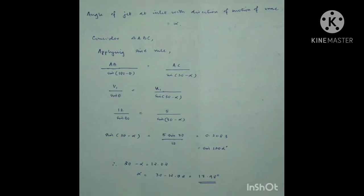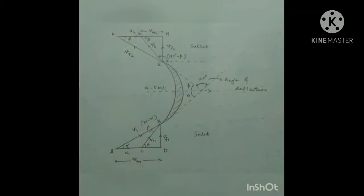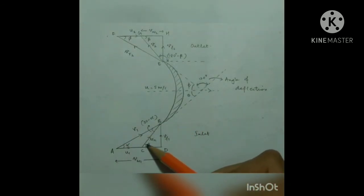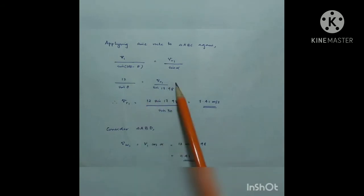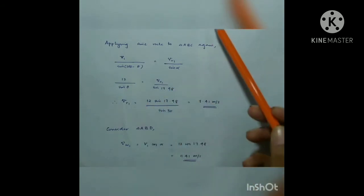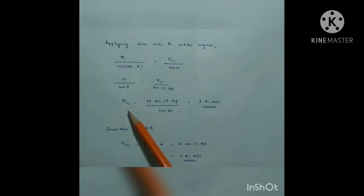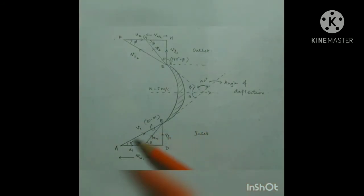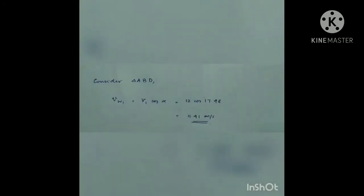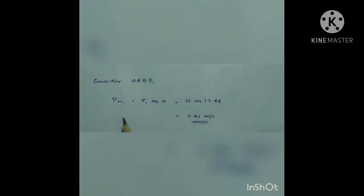We have found alpha. For the second part, applying the sine rule again to triangle ABC: V1 / sin(180° − theta) = Vr1 / sin(alpha), which gives 12 / sin(theta) = Vr1 / sin(17.98°), and we get Vr1 = 7.41 m/s. Now considering triangle ABD, Vw1 = V1 × cos(alpha) = 12 × cos(17.98°) = 11.41 m/s.